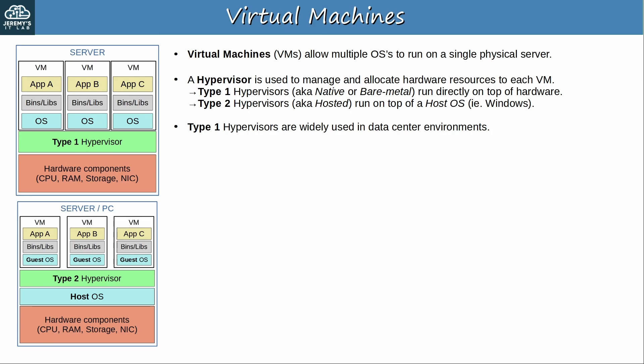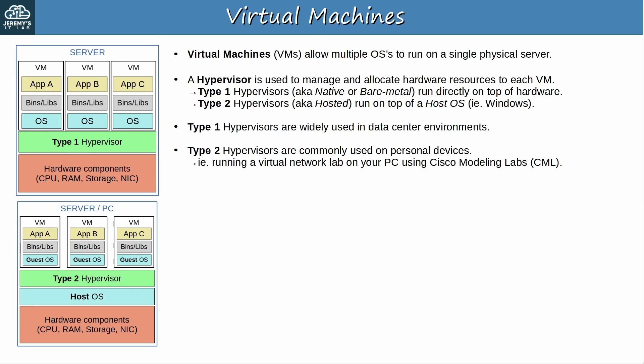Type 1 hypervisors are widely used in data center environments. If an enterprise has servers installed in a data center and is running its apps on VMs, you can be sure those VMs are running on a type 1 hypervisor. Type 2 hypervisors are commonly used on personal devices — for example, running a virtual network lab on your PC using Cisco Modeling Labs. I use CML to run virtual labs: Windows is installed on my PC hardware, I run VMware Workstation (a type 2 hypervisor) in Windows, and then CML runs as a VM in Workstation.